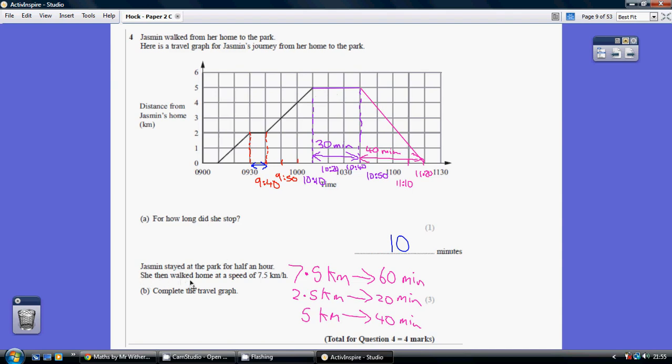Now, we're then told that she walks home at a speed of 7.5 kilometres per hour. Now, this takes a bit of thought. 7.5 kilometres per hour. That's 7.5 kilometres over 60 minutes. Now, we're interested in knowing how long it takes her to get home from being 5 kilometres away. So, let's try and scale down and then scale up again to get to 5 kilometres.